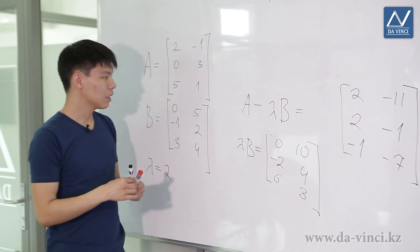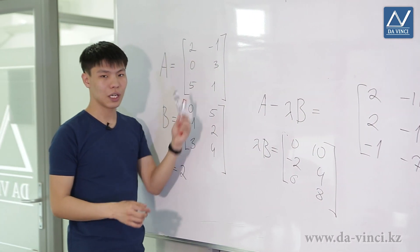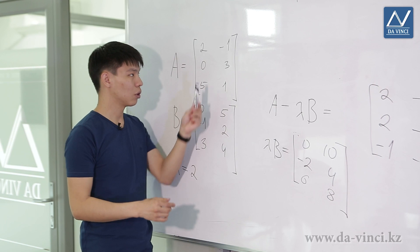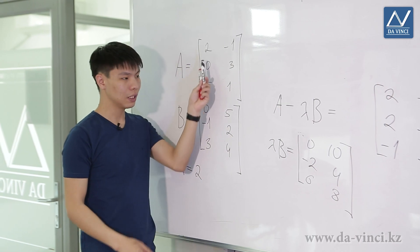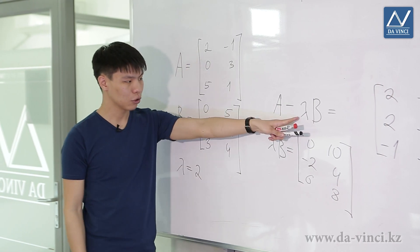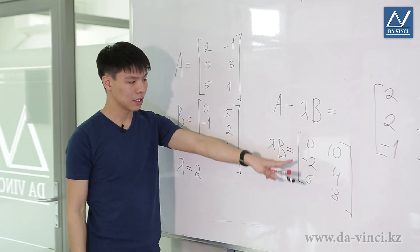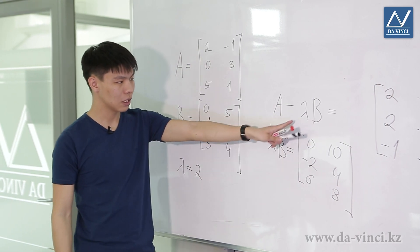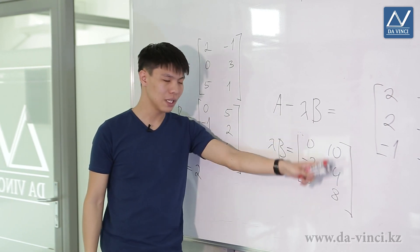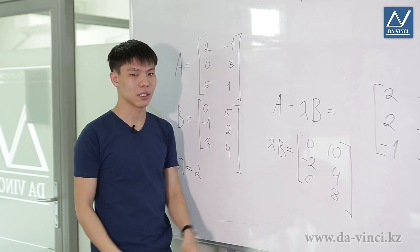Thus, addition and subtraction of matrices occurs element by element, and to multiply a matrix by a number, we simply multiply that number by all elements of the matrix.